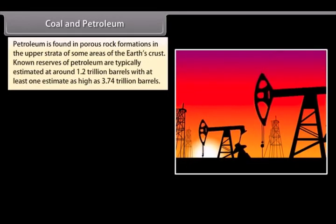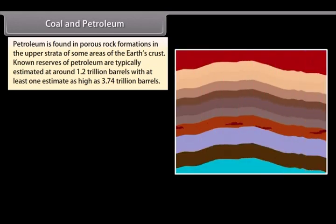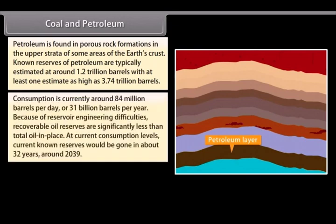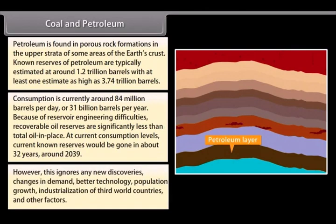Petroleum is found in porous rock formations in the upper strata of some areas of the earth's crust. Known reserves of petroleum are typically estimated at around 1.2 trillion barrels, with at least one estimate as high as 3.74 trillion barrels. Consumption is currently around 84 million barrels per day or 31 billion barrels per year. Because of reservoir engineering difficulties, recoverable oil reserves are significantly less than total oil in place. At current consumption levels, known reserves would be gone in about 32 years, around 2039. However, this ignores any new discoveries, changes in demand, better technology, population growth, industrialization of third world countries, and other factors.